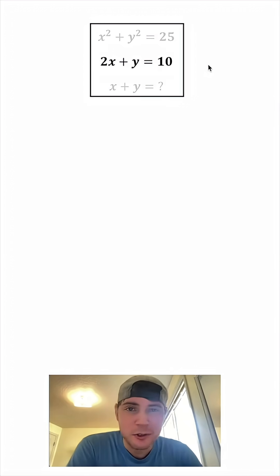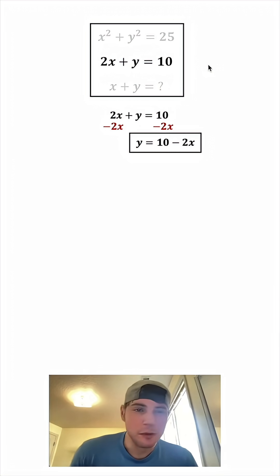So first, let's focus on the 2X plus Y equals 10. Let's get the Y all by itself. Let's subtract 2X from both sides. On the left-hand side, we just have Y, and on the right-hand side, we have 10 minus 2X. And this is important, so let's put a box around it.